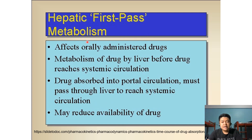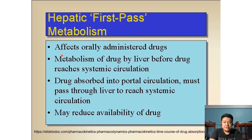For orally administered drugs, there is an important phenomenon known as the hepatic first-pass effect, or hepatic first-pass metabolism. This refers to the metabolism of the drug by the liver before the drug reaches the systemic circulation. The drug absorbed in the portal circulation must pass through the liver to reach the systemic circulation. Through first-pass metabolism, the availability of the drug in the systemic circulation is reduced. A separate lecture on the hepatic first-pass effect will follow in succeeding chapters.